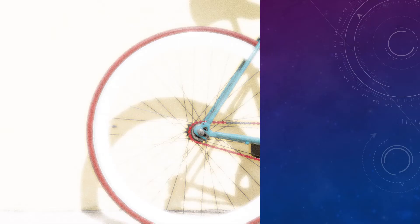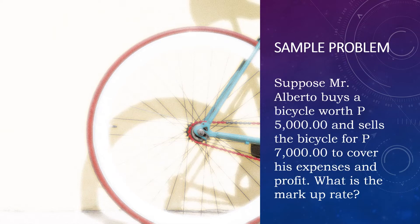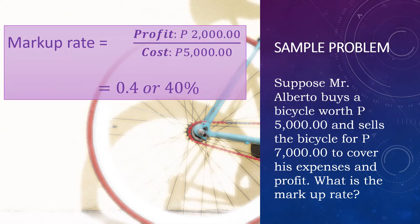To better understand the concept, here is a sample problem. Suppose Mr. Alberto buys a bicycle worth 5,000 pesos and sells the bicycle for 7,000 pesos to cover expenses and profit. How much is the markup rate? To compute for the markup rate, we use profit divided by cost. The profit is 2,000 pesos since the selling price is 7,000 and the cost is 5,000. Dividing 2,000 by 5,000 gives a markup rate of 40%.